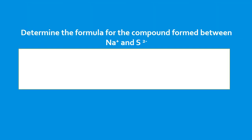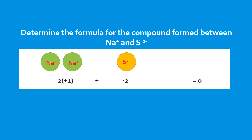Let's look at how you determine the formula of a compound. We have a compound formed between the sodium ion (+1) and the sulfide ion (−2). The charges are not balanced, so we add another sodium ion, giving us an overall charge of +2 and −2, which balances to zero — a neutral compound. The formula requires two sodium atoms and one sulfide atom, giving us Na₂S.